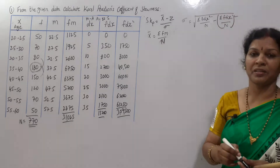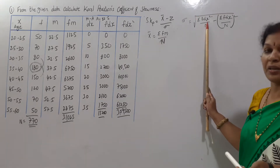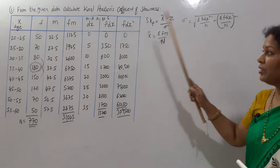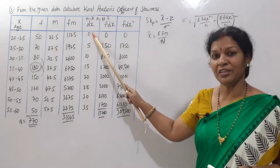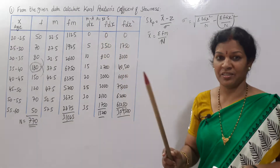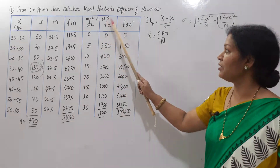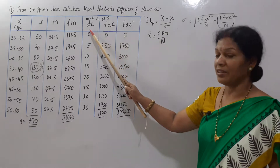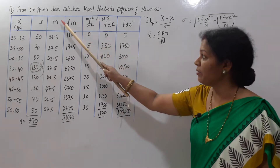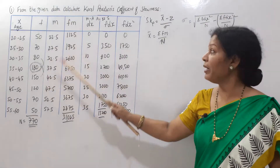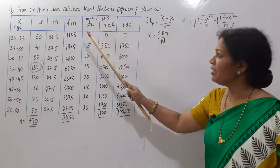To compute standard deviation, we create a dx column. dx means m minus a, where m is the mid value and a is the assumed mean. We always assume a mean value for easier calculation.